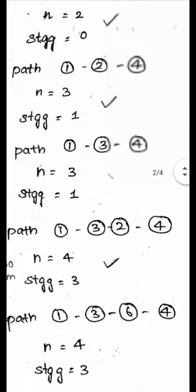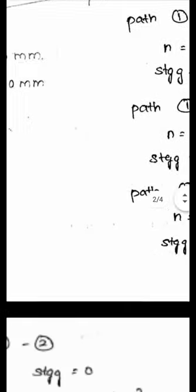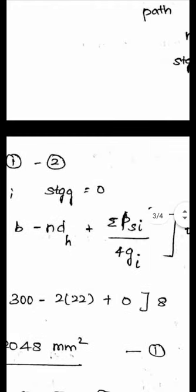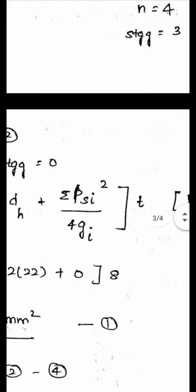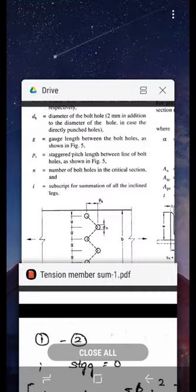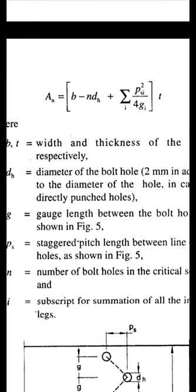For the calculations, the formula from clause 6.3.1, page 33 is: An = (B minus N×Dh + sum of Ps² / 4g) × t, where B and t are width and thickness of the plate, Dh is the diameter of the hole, g is the gauge length, Ps is the staggered pitch, N is the number of bolts in the critical path, and i is the summation over all inclined legs.